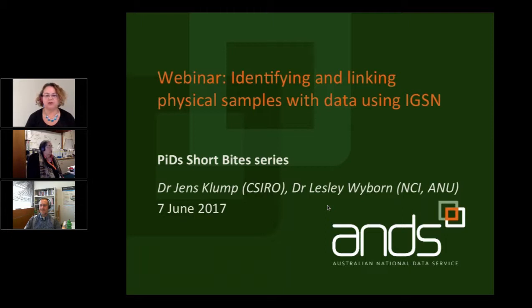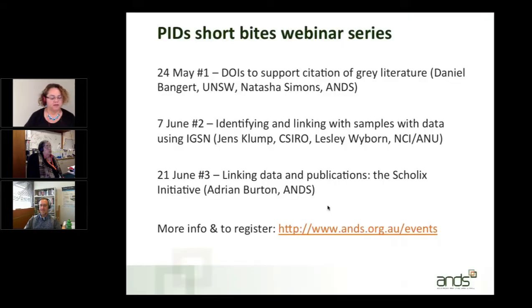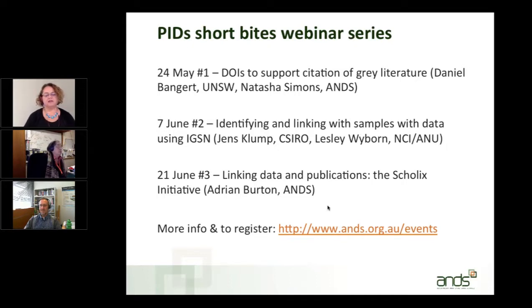This webinar will look at how you can reference physical samples online using a world-standard, globally unique persistent identifier scheme — the International GeoSample Number — as well as discuss the International Linking Environmental Data and Samples Symposium held last week at the CSIRO Black Mountain Laboratories in Canberra. This webinar is the second in a series examining persistent identifiers and their use in research. The first webinar looked at citing grey literature using DOIs, and the recording is available on the ANDS YouTube channel. The third in the series will look at how to link publications and data through the International Scholix Initiative.